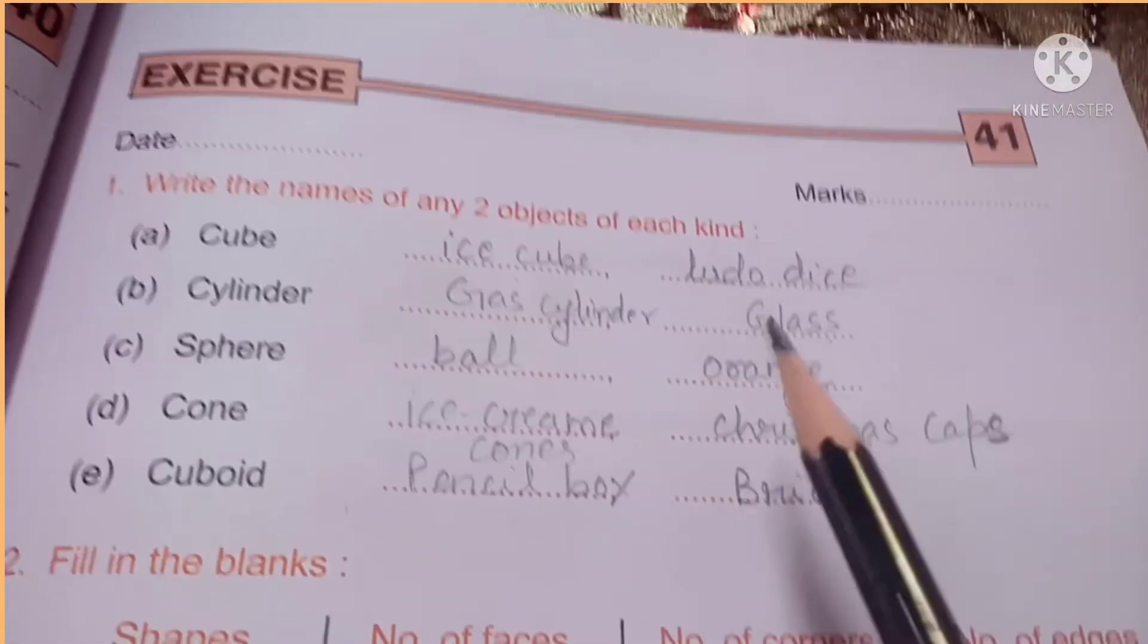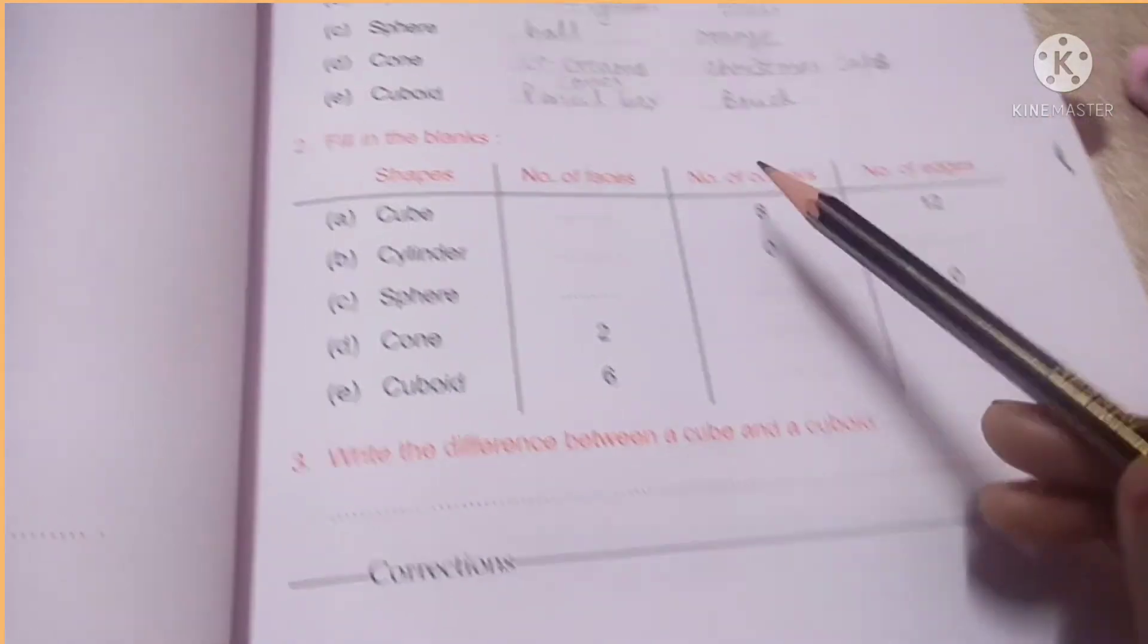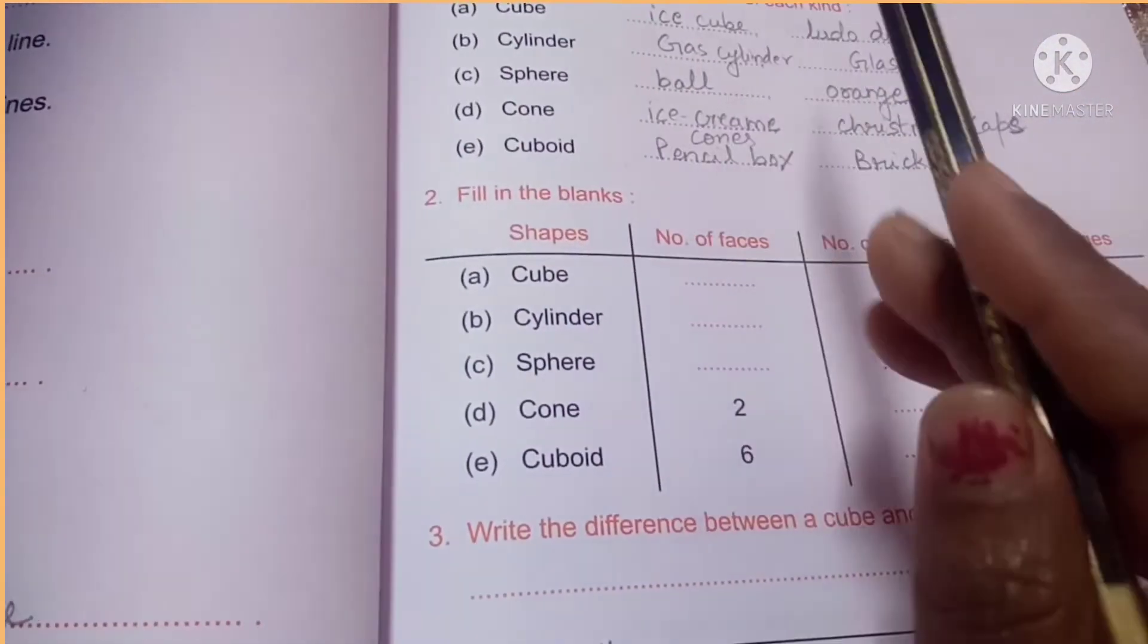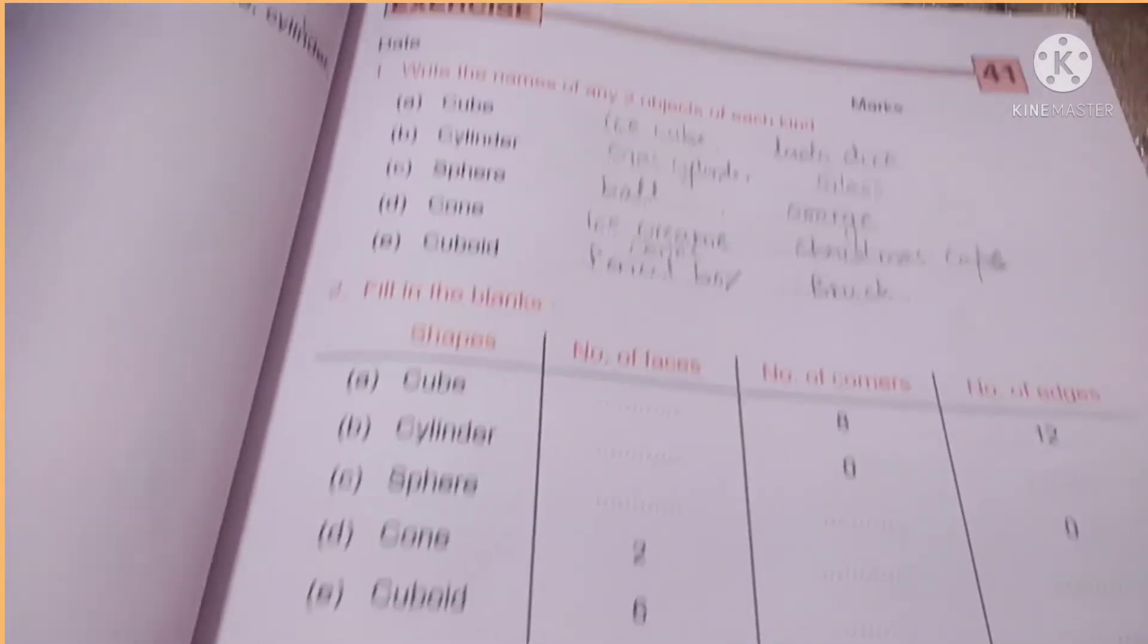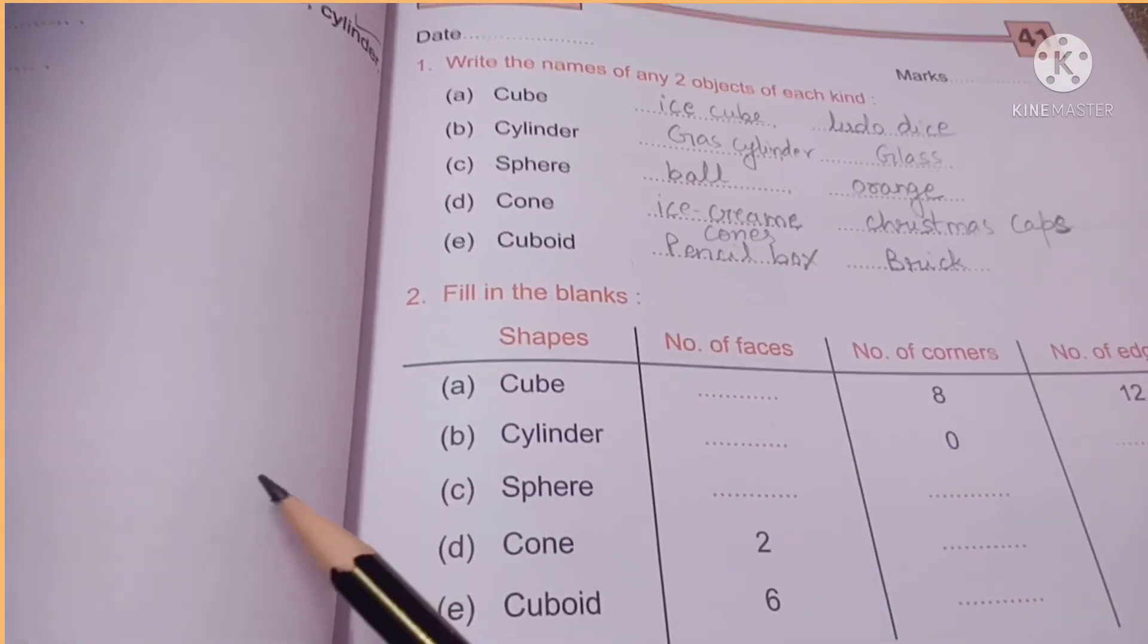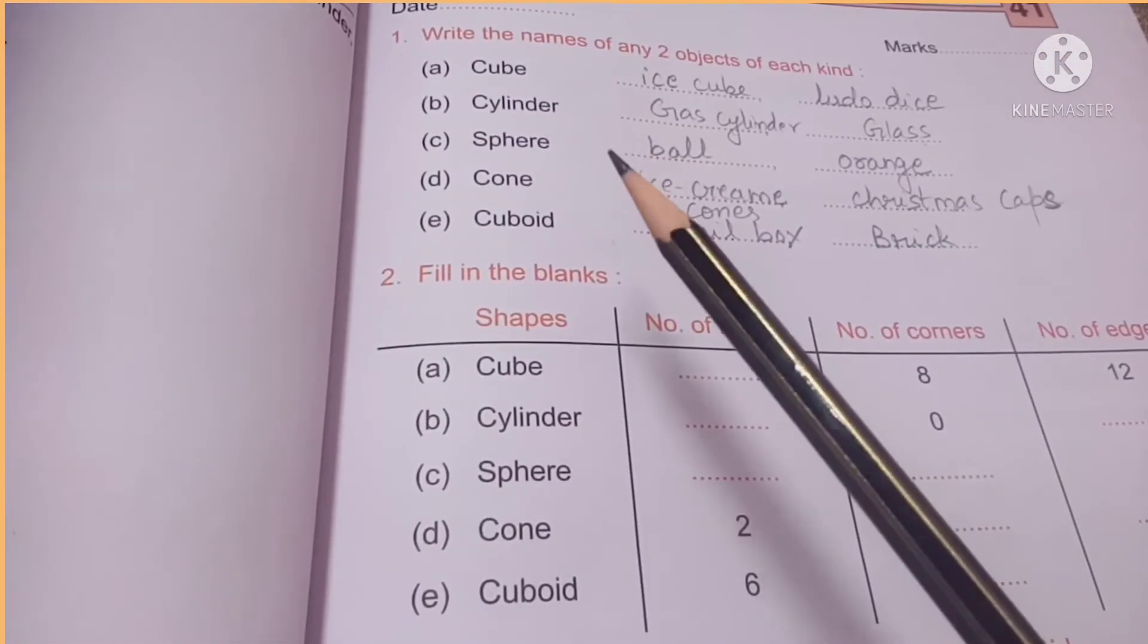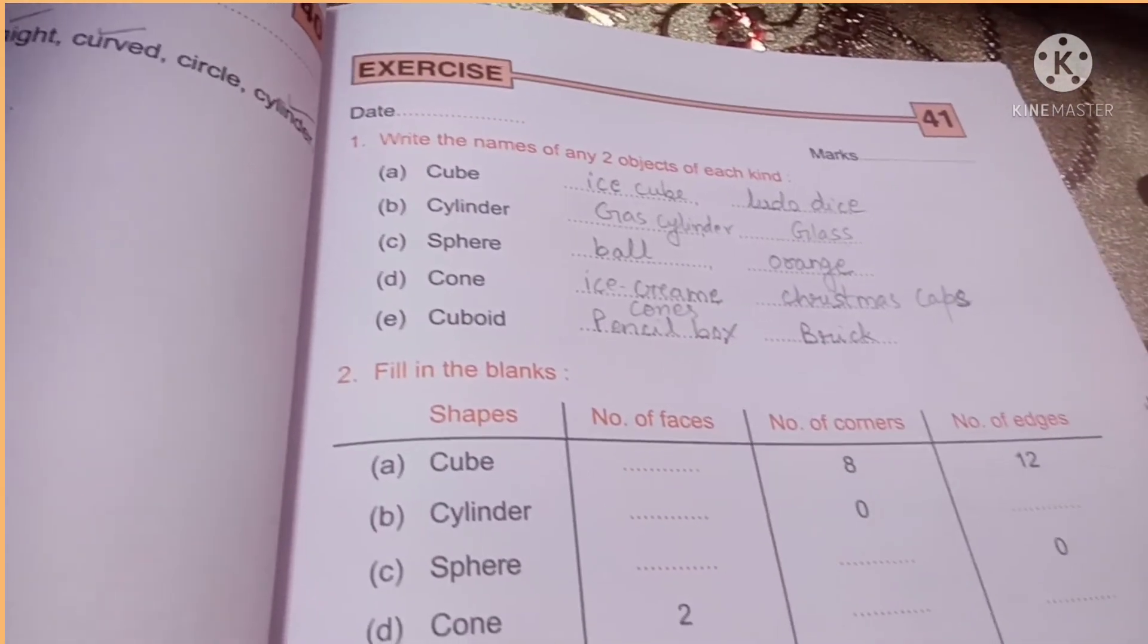So, I think so far we will be doing this much. I hope you have understood page number 47, 48 and 49. Only till question number 1 we will be doing. 2 and 3 we will do later. So, that's all in this video, children. Please watch it carefully, understand and complete the work which has been assigned to you. Thank you and bye-bye. See you next time.